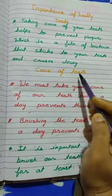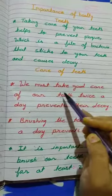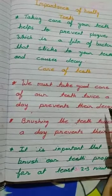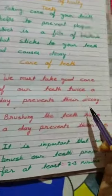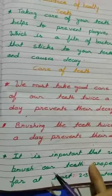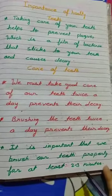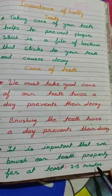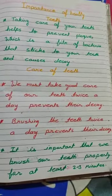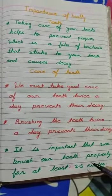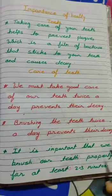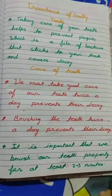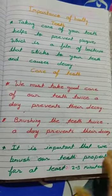I am explaining about the care of teeth. We must take good care of our teeth twice a day to prevent their decay — we should brush daily two times. It is important that we brush our teeth properly for at least two to three minutes. When children brush their teeth, they are very fast and they do not brush their teeth twice a day. We should brush for two to three minutes.